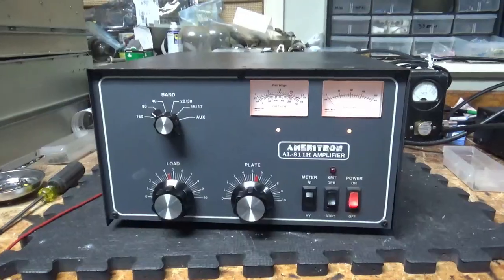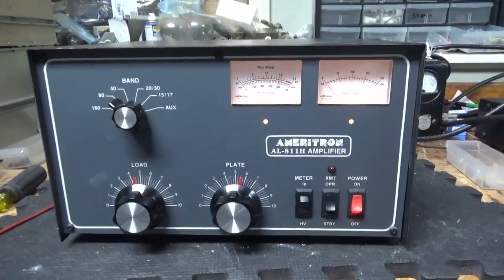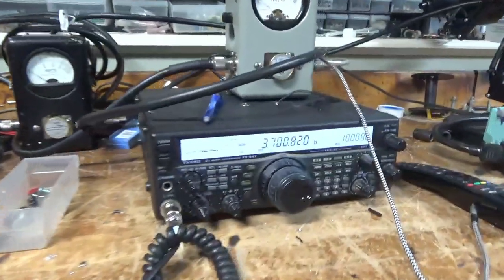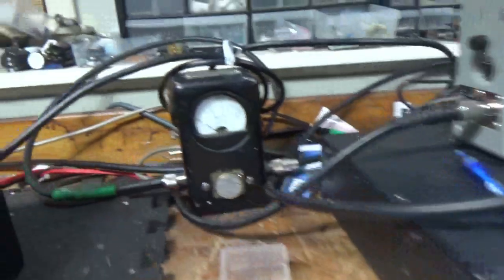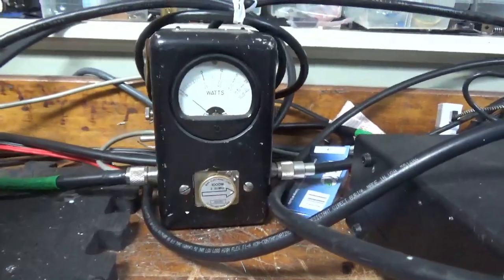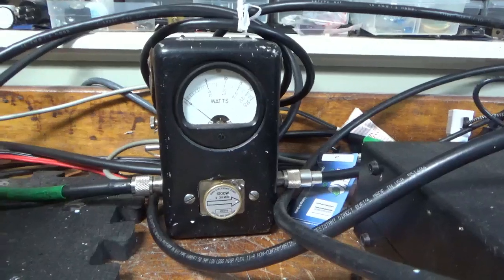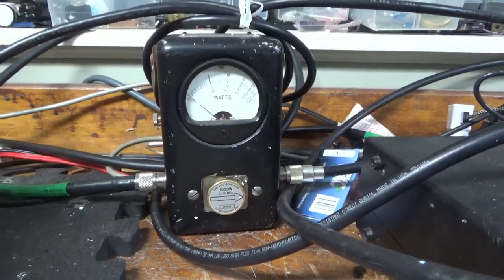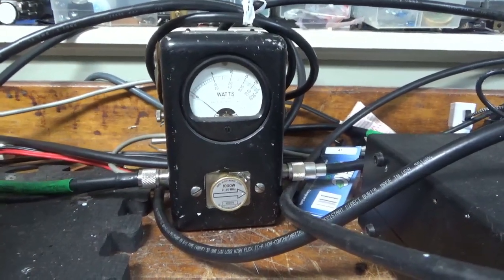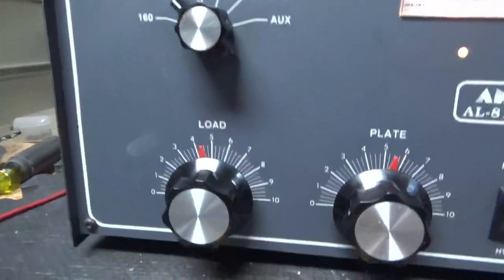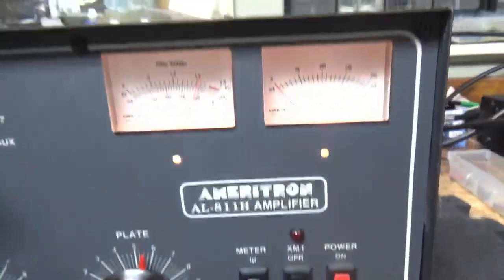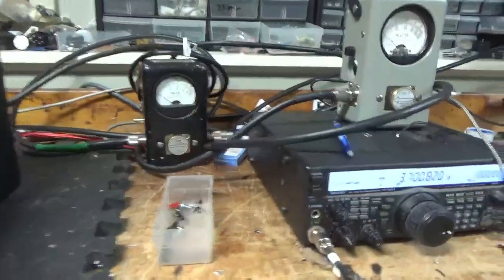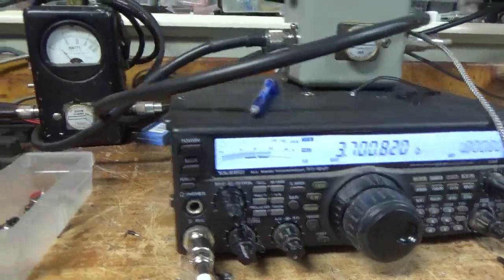Okay, so we're back with the completed Ameritron AL-811H. Got it on 3.7 MHz. One KW slug. Bird 43. Bird PEP kit is installed and turned on. And it's going into a bird dummy load. So you can see the settings. Radio's set to roughly 50 watts.